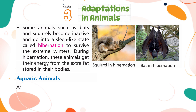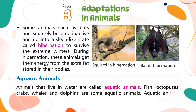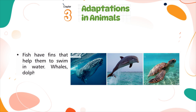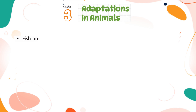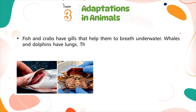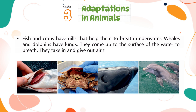Aquatic Animals. Animals that live in water are called aquatic animals. Fish, octopuses, crabs, whales, and dolphins are some aquatic animals. Fish have fins that help them swim in water. Whales, dolphins, and turtles have limbs modified to form flippers. Fish and crabs have gills that help them breathe underwater. Whales and dolphins have lungs and come up to the surface to breathe, taking in and giving out air through a hole called the blowhole on their heads.